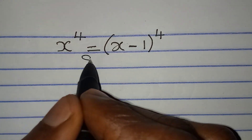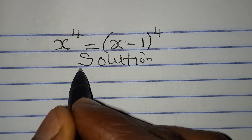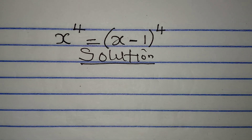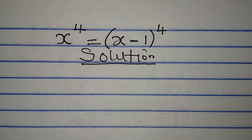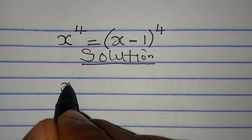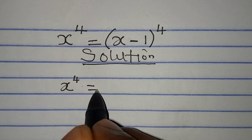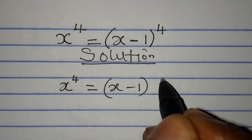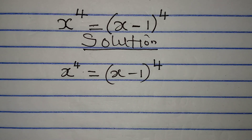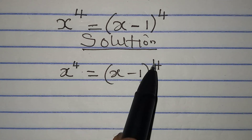Hello everyone, let's solve this problem. Welcome to Few Cool Math, where we provide solutions to math problems showing all the steps. We have x to the power of 4 equal to x minus 1 to the power of 4. Just stay back and watch — remember, you cannot equate the bases because the powers are the same; doing that would be wrong.